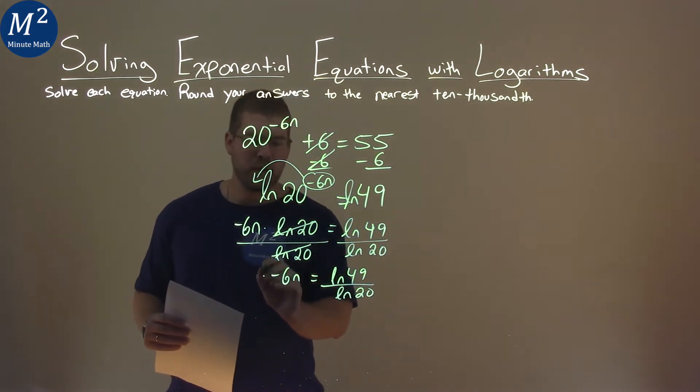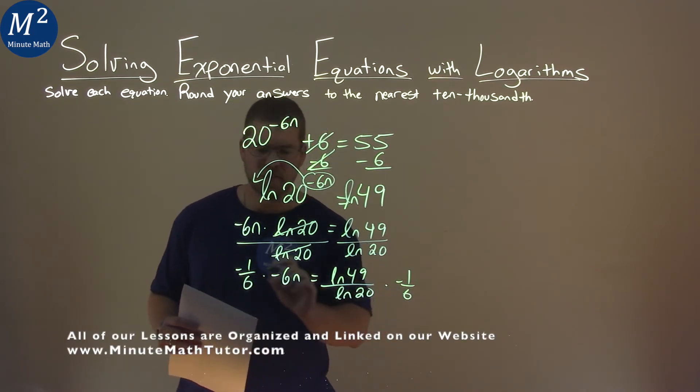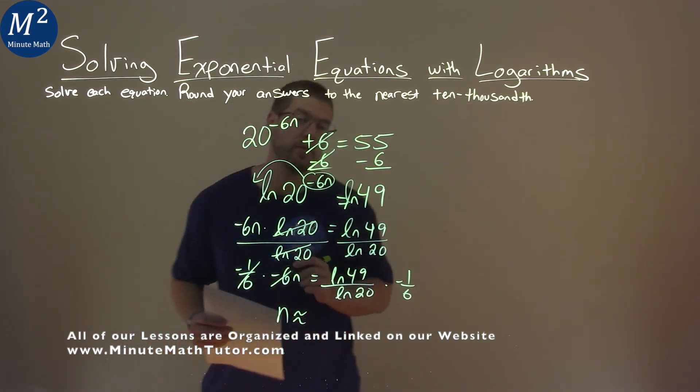I can multiply both sides by negative 1 over 6, and this is going to cancel the negative 6 on the left. Now it's going to be an approximate answer, and we'll use our calculator here.